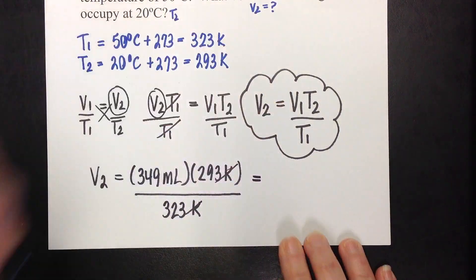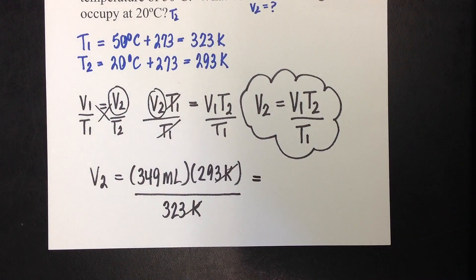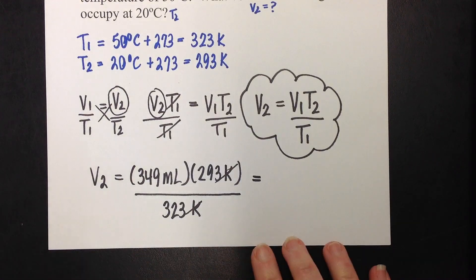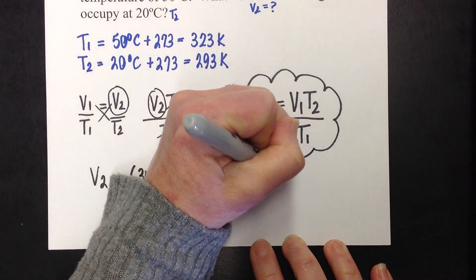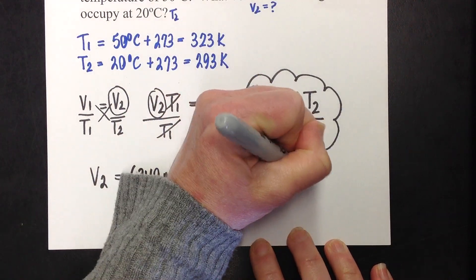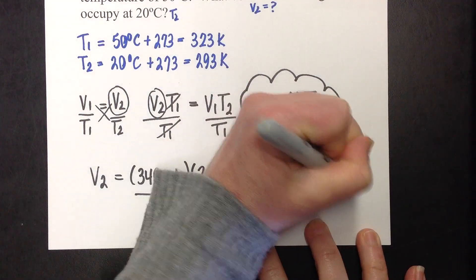So, all I have to do now is multiply 349 by 293, hit equals, divide by 323, and you will get 316.58 milliliters.